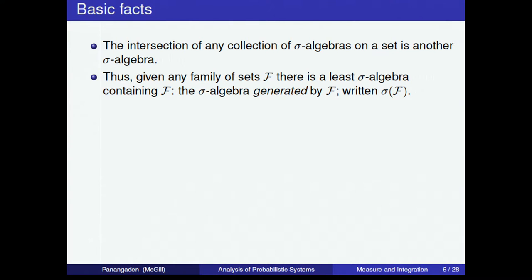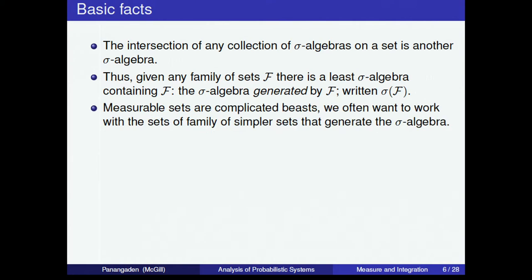Since we're closed under complementation, we are immediately also closed under intersections, so that need not be stated separately. Importantly, if you take any collection of sigma algebras on a set and intersect them, you get a sigma algebra. This means we can define a sigma algebra generated by any family of sets: take all sigma algebras containing that family, intersect them, and get the smallest one. We write this sigma(F). The full power set is always an example, so the collection is never empty.